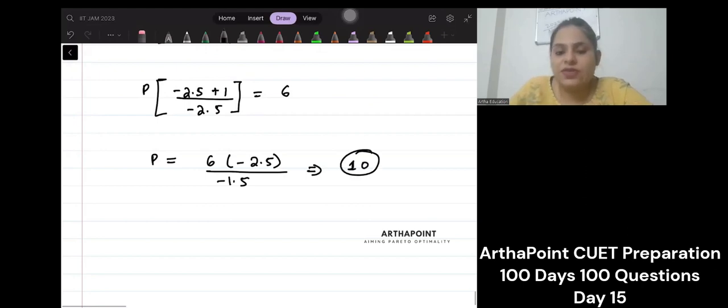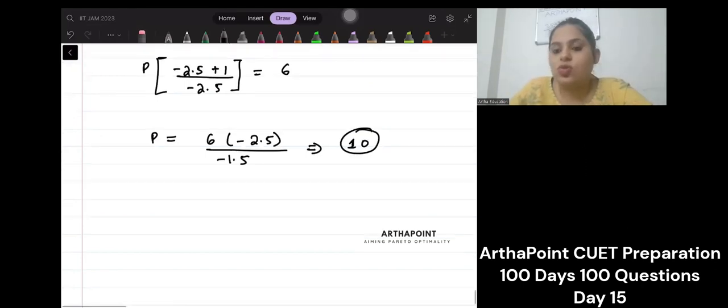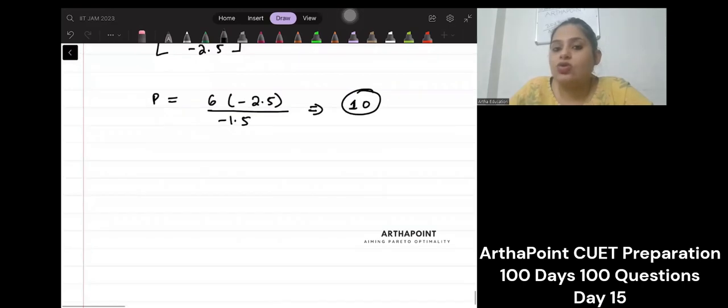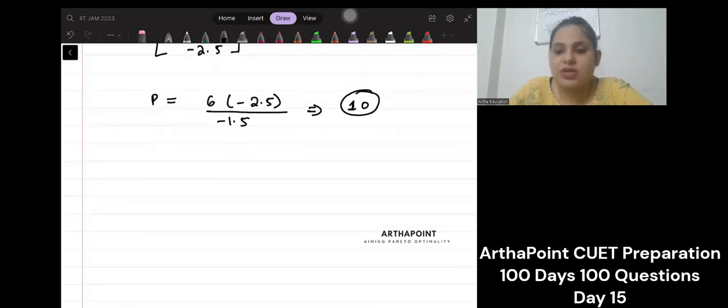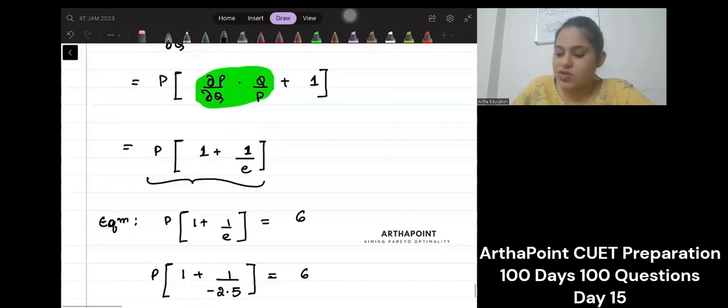So if the monopolist wants to maximize its profit, it must charge a price of 10. So this is solved, right? So the price should be 10.